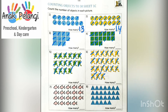Now, look at number 7. Let's count how many fish there are. 1, 2, 3, 4, 5, 6, 7, 8, 9, 10, 11, 12, 13, 14, 15, 16, 17, 18, 19. How many? Write 19 here.